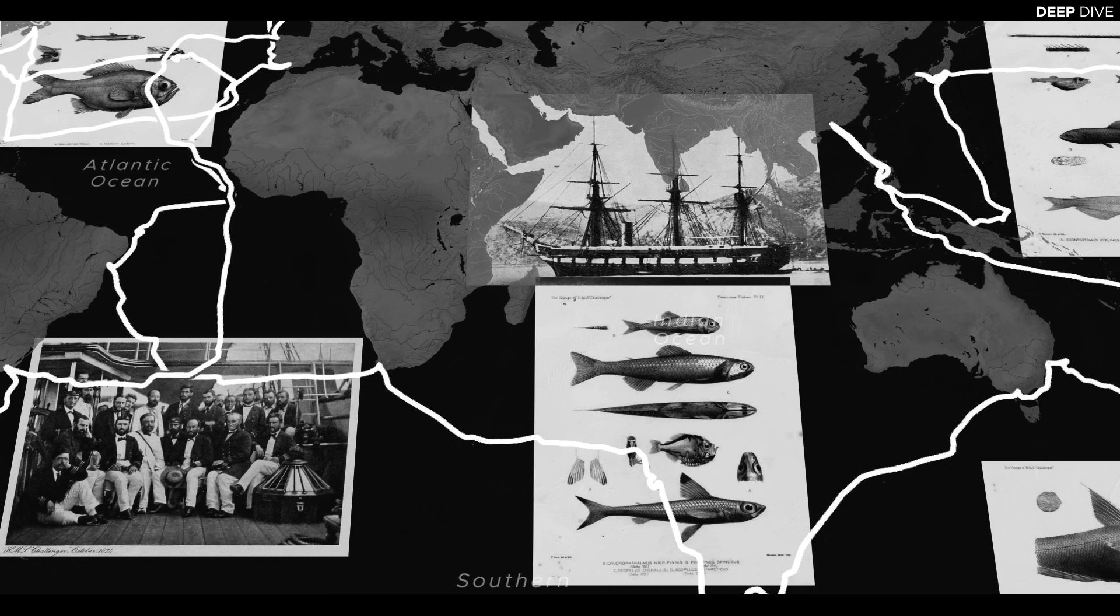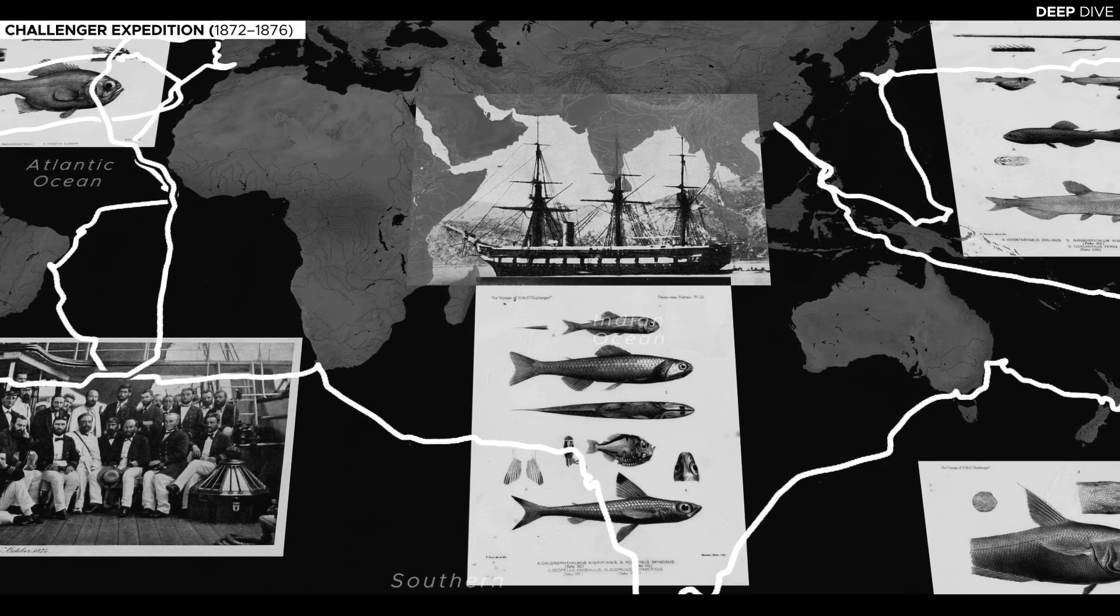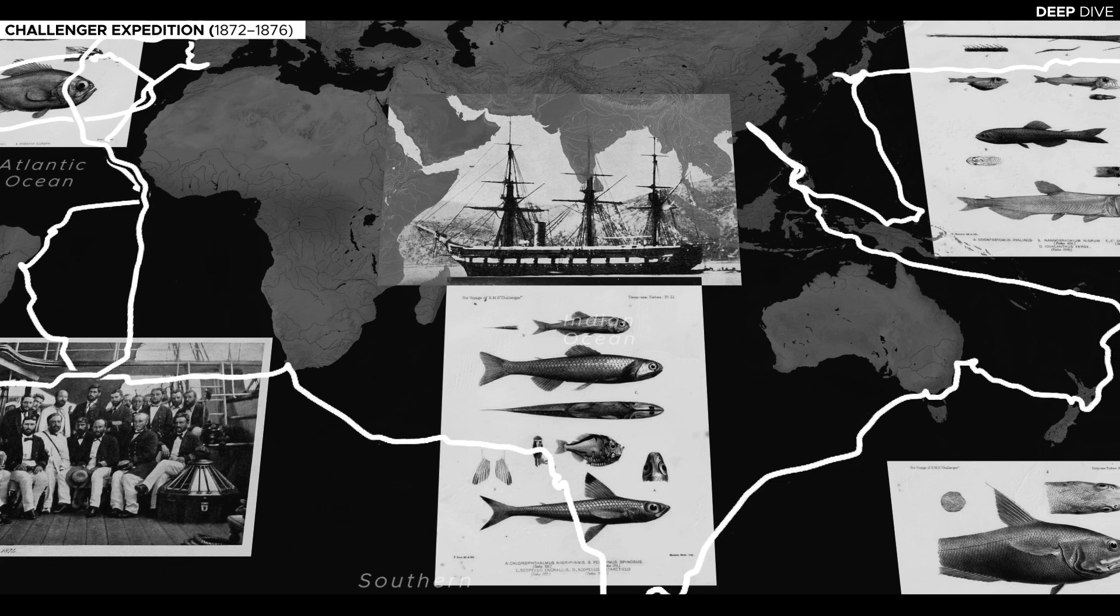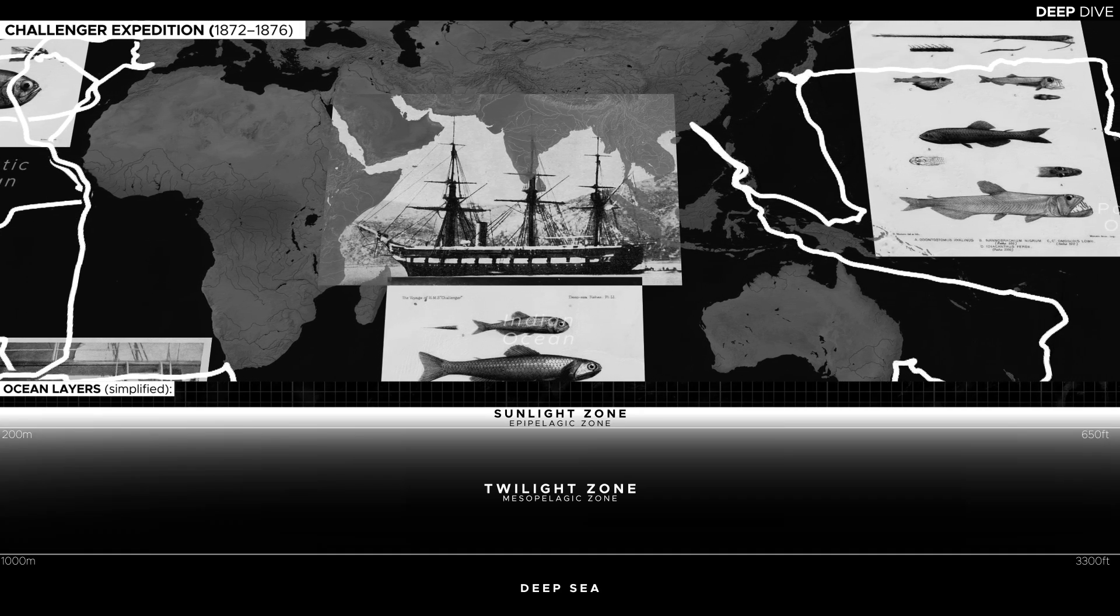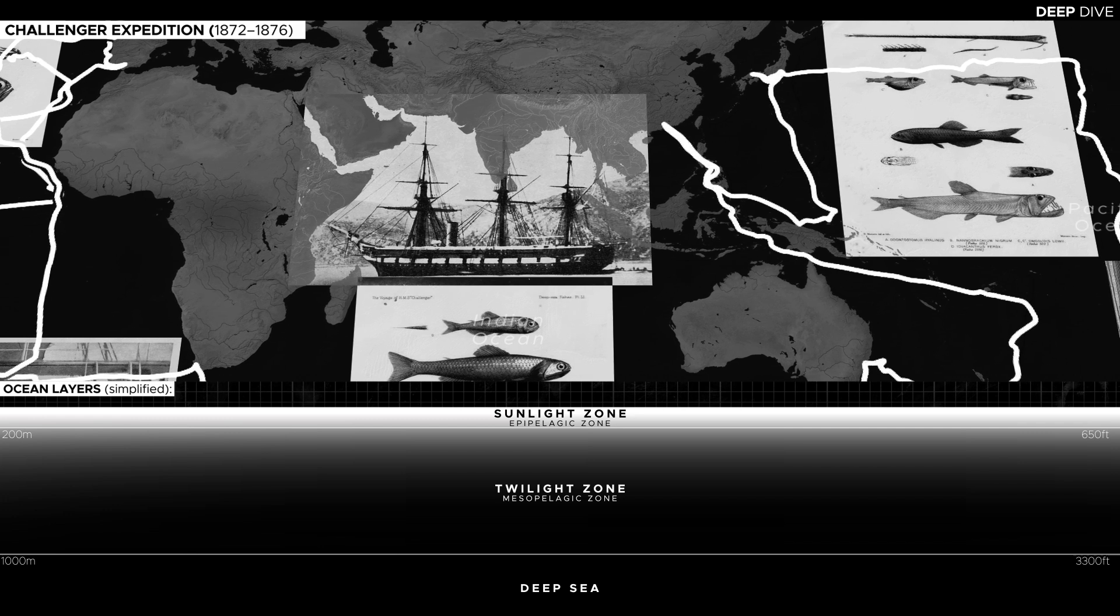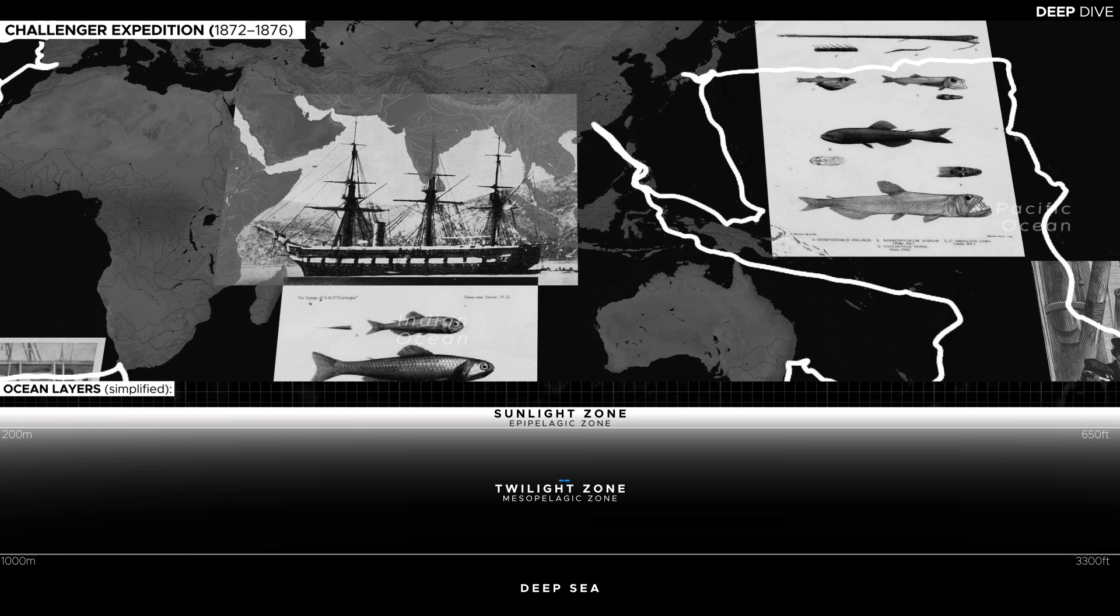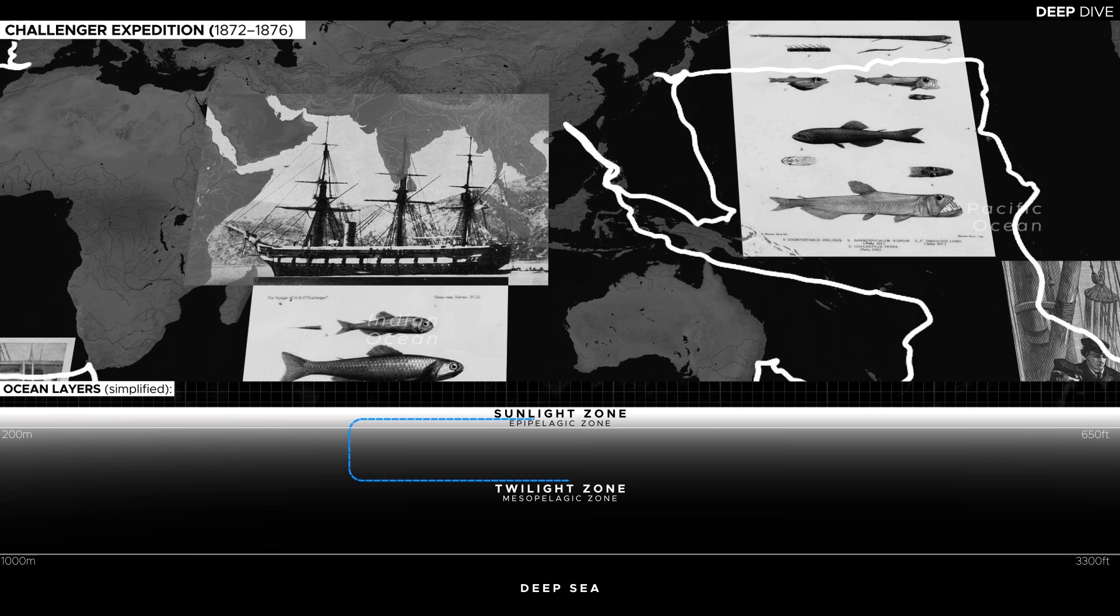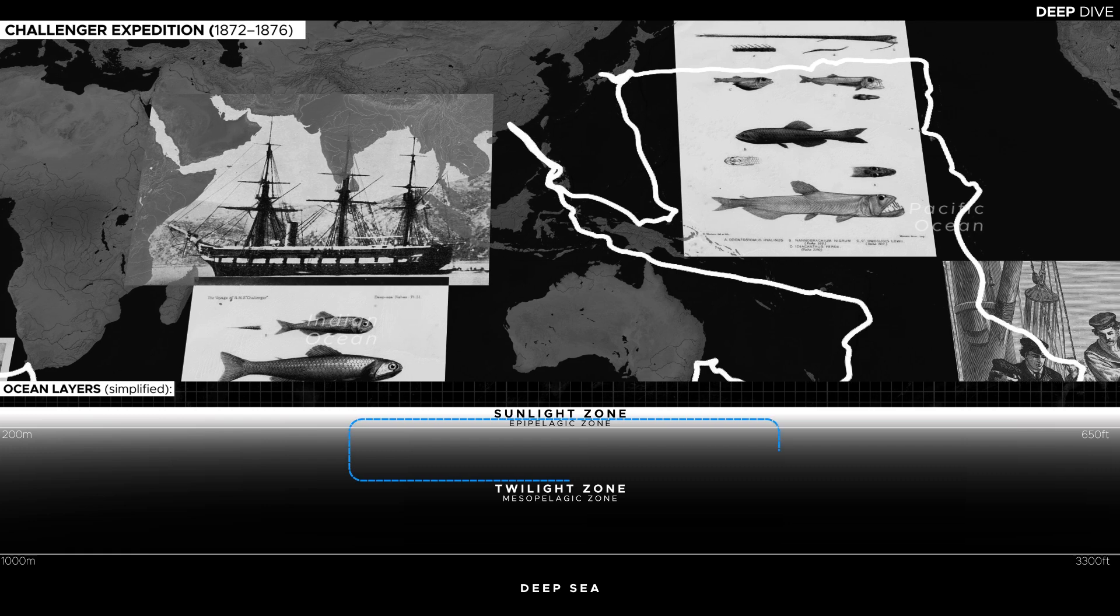Since the Challenger Expedition, a scientific expedition conducted by the British government during the 1870s for the purposes of exploring and studying the open ocean, it had been known that certain animals from the Twilight Zone, the part of the ocean that sits between the sunlit surface waters and the pitch black deep sea at depths of 200 to 1000 meters, make considerable vertical migrations every night to feed in the rich waters near the surface, before returning to the relative safety of the deep at dawn.